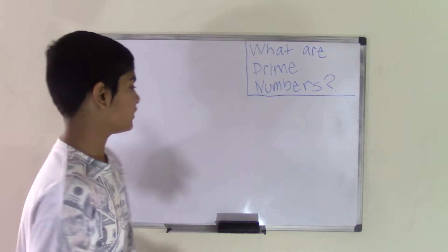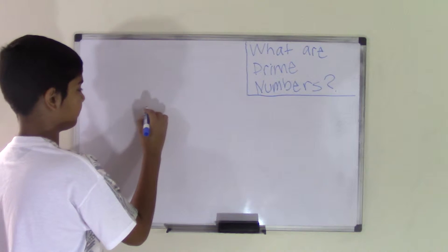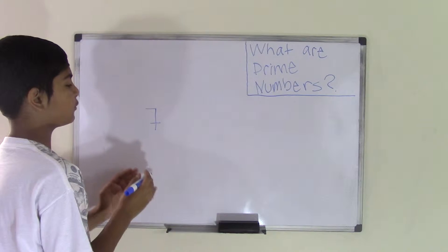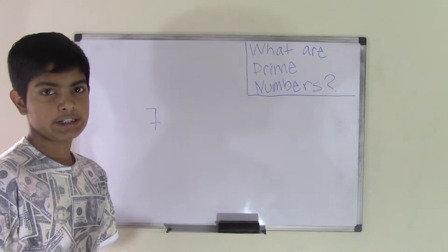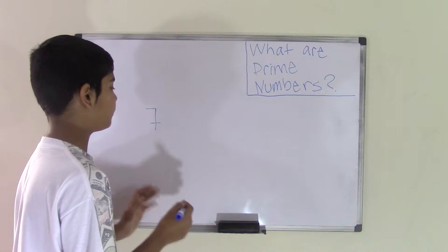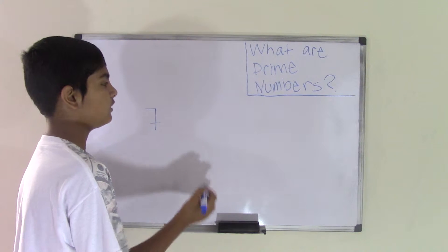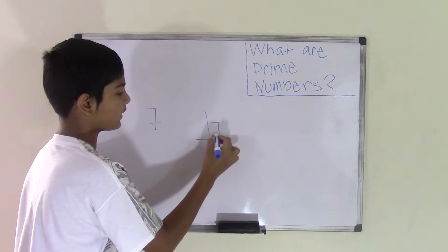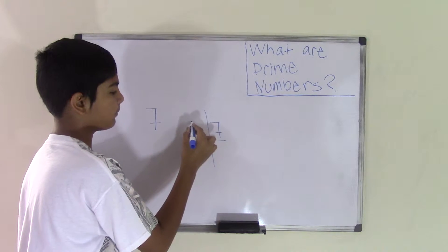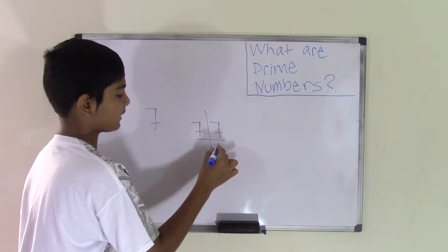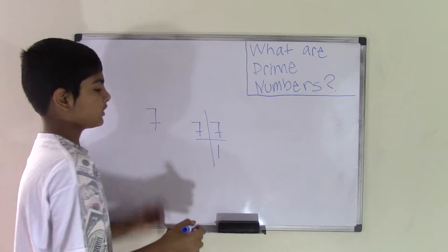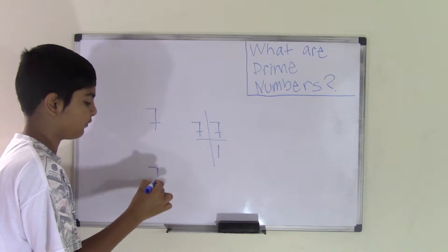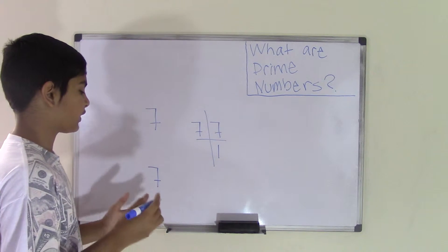So let's say we have the number 7. To find the factors of this number, we would have to divide it by smaller numbers. But since 7 cannot be divided by any other number, 7 can only be divided by 7 itself. So let's divide: 7 divided by 7 equals 1, meaning 7 times 1 is 7.